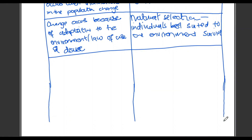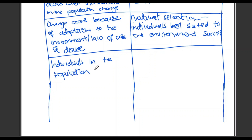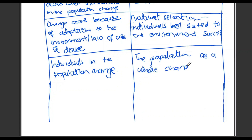Remember to use a ruler when you're drawing your table and make sure it's neatly drawn. The third point is about the population and the individuals within it. With Lamarck, the individuals in the population change. Whereas with Darwin, the population as a whole changes. The key difference: with Lamarck it's just the individuals in the population that change; with Darwin the population as a whole changes.